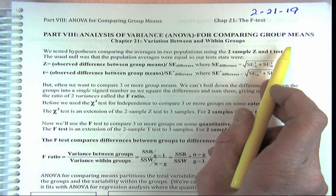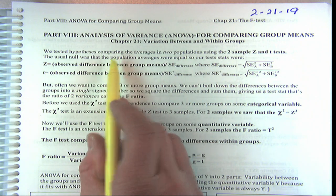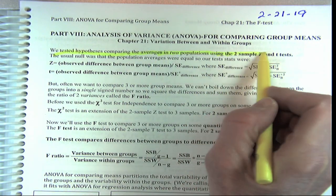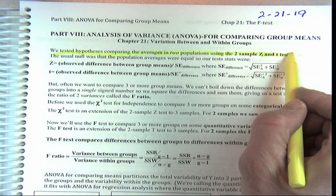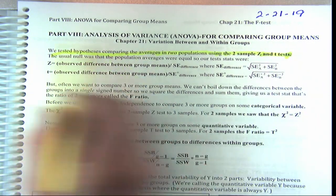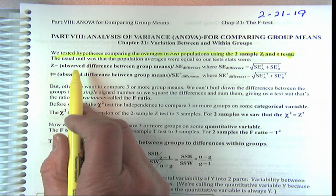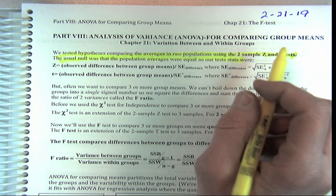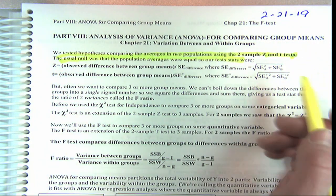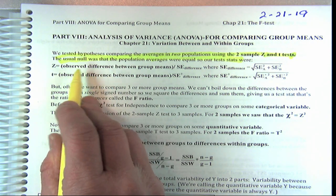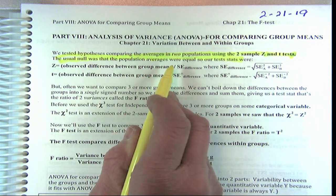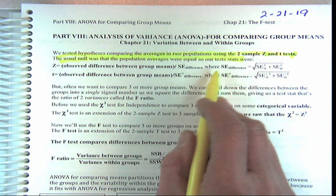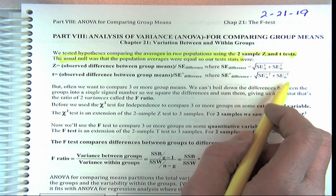Before, we tested hypotheses comparing the averages — the means — in two populations. We did the two-sample z-test with big samples and the t-test if we didn't know the variance, had small samples that were normally distributed. The usual null hypothesis was that the population means were equal, and differences we saw in our samples were just due to chance.